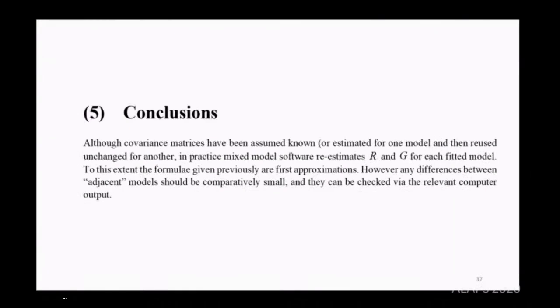Conclusions. Firstly, covariance matrices have been assumed known or estimated for one model and then reused for another. In practice, mixed model software re-estimates these for each fitted model. So there'll be an R hat and a G hat for the two models. G hat will be zero when you're treating the random parameters as fixed. So these are first approximations. However, any difference between adjacent models should be comparatively small and can be checked through the relevant computer output.